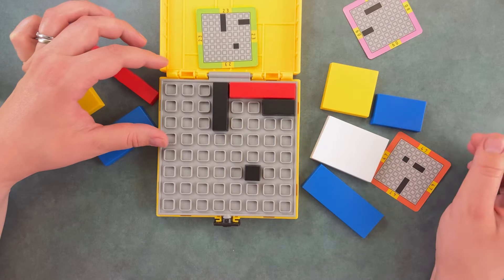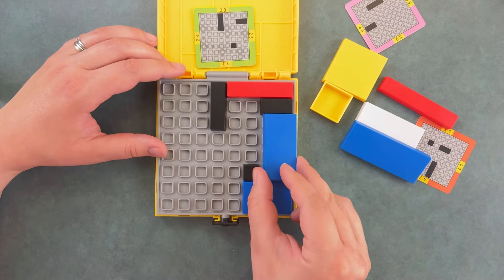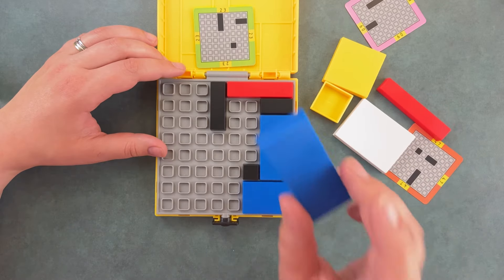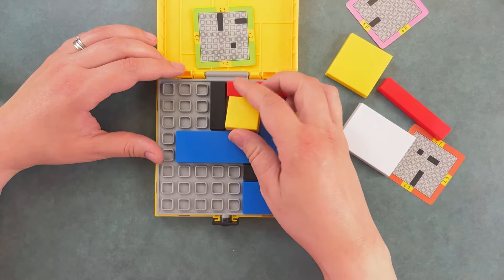You can see we need the red piece to go up there. Put this blue piece on the bottom. Take this blue piece and place it there. Place this blue piece this way. Take the yellow piece and place it there.